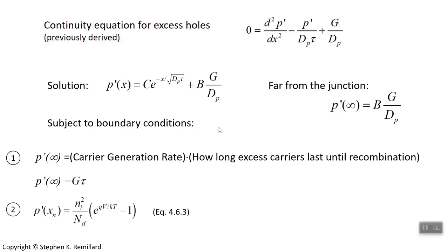The second boundary condition, we have a place where we know what things are at the depletion edge. X equals x sub n. This is on the n side. And we're talking about holes as the minority carrier density. At the depletion edge, which we derived this as well. Go back to Lecture 32 and read up on the forward biased p-n junction. You can also read about it in chapter 4 section 6. So that's an expression that we will make use of. Those are two boundary conditions. Circle them.